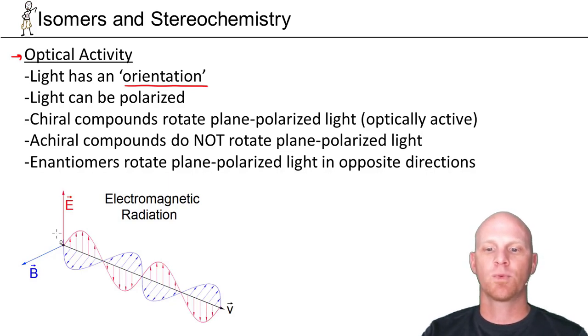It turns out associated with electromagnetic radiation is an electric field, a vector pointing in a certain direction, and a magnetic field that is also a vector pointing in a perpendicular direction. Then perpendicular to both of those is the direction of propagation.